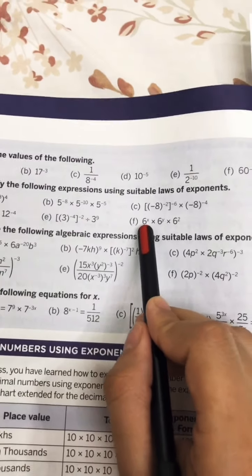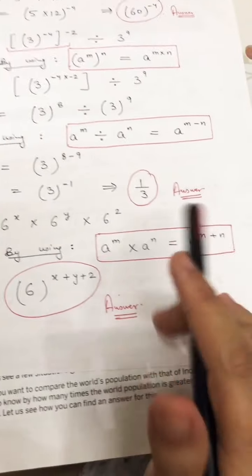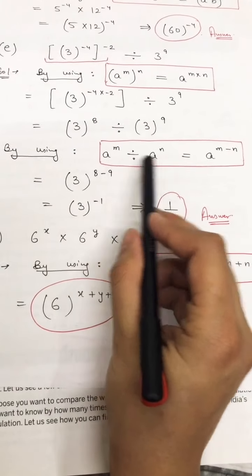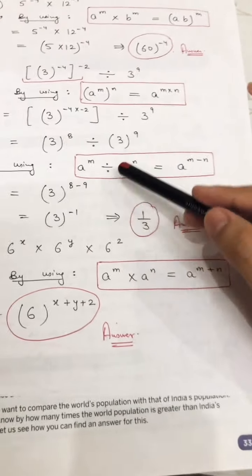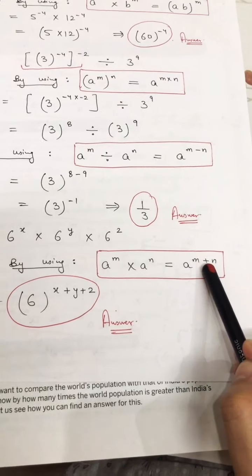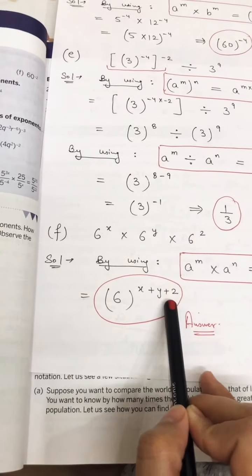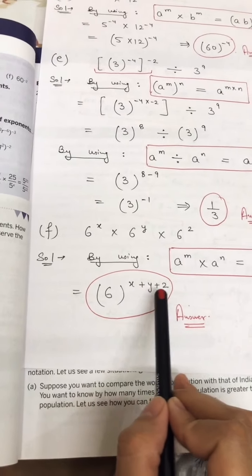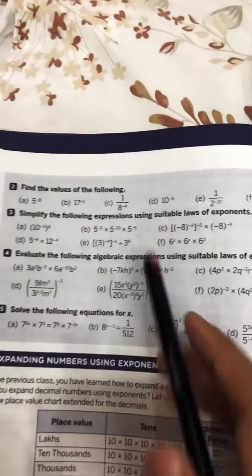Part F is 6 raised to power x, multiplied by 6 raised to power y, multiplied by 6 raised to power 2, and this equals 6 raised to power x. Base is same and powers are different, so we use: a raised to power m multiplied by a raised to power n equals a raised to power m plus n. Writing base 6 once and adding powers: x plus y plus 2. Since x and y are variables and 2 is a constant, we cannot further compute these values. The complete answer is 6 raised to power x plus y plus 2.